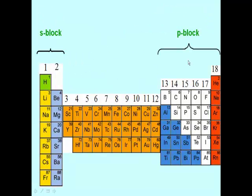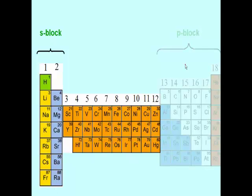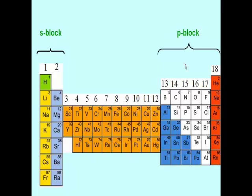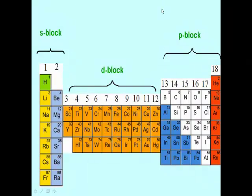Likewise, the elements in groups 13 to 18 make up the P block, because their P orbitals are filled last. For instance, let us look at the electronic configuration of boron. We can see that the last orbital to be filled with electrons is the 2P orbital.